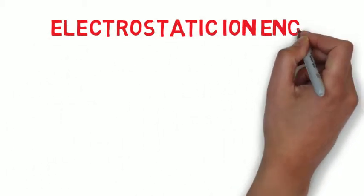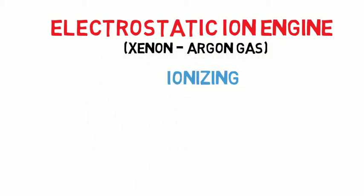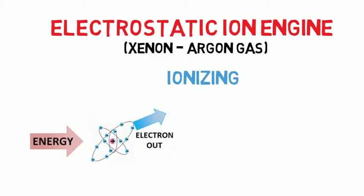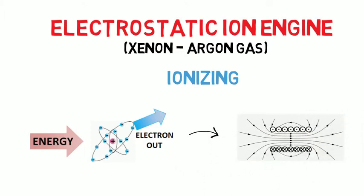An electrostatic ion engine works by ionizing a fuel which is often either xenon or argon gas. Ionizing means making the gas electrically charged by knocking off an electron to make a positive ion. After this, the positive ion diffuses into a region between two charged grids that contains an electrostatic field.